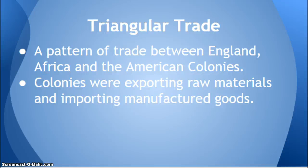For today's assignment, there's a link on your Edmodo wall where you'll open and create your own version of the triangular trade map. Several arrows are already pointing in the correct directions. Research the triangular trade and figure out the major items being traded back and forth, then click each arrow and make a comment for what products are being shipped. If you have any questions, send a direct message on Edmodo or through the garaway.org email system.